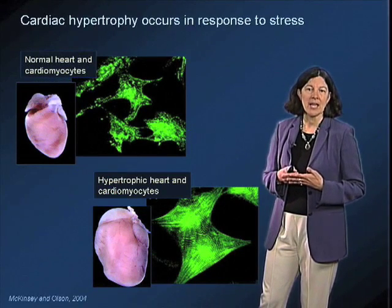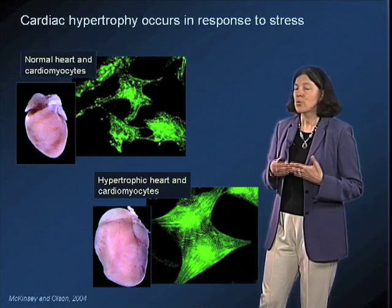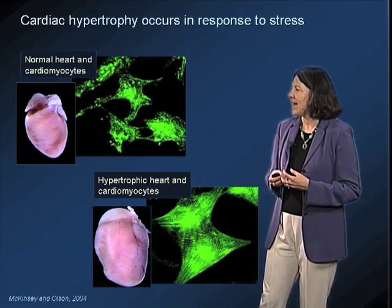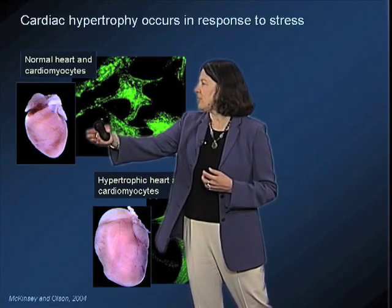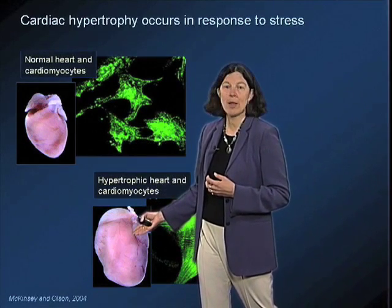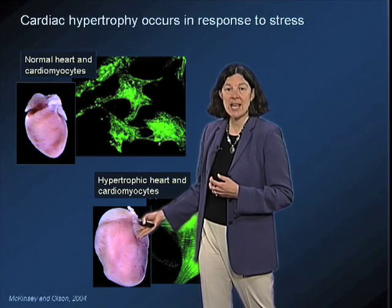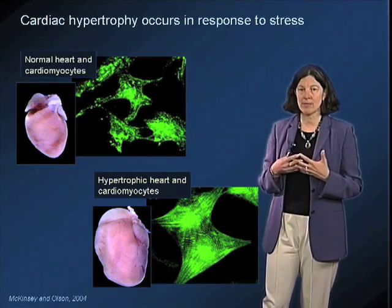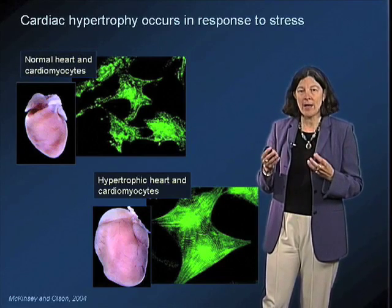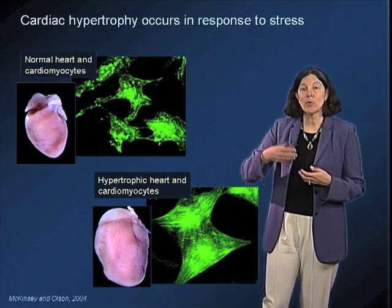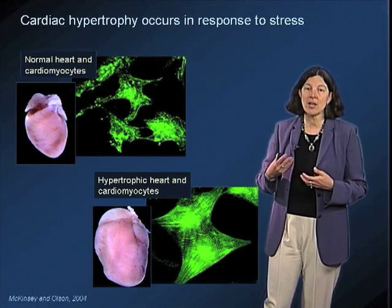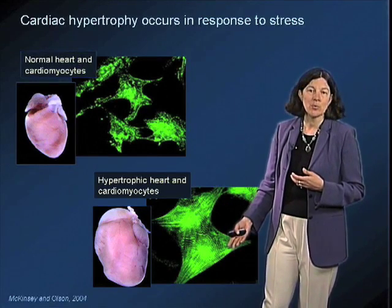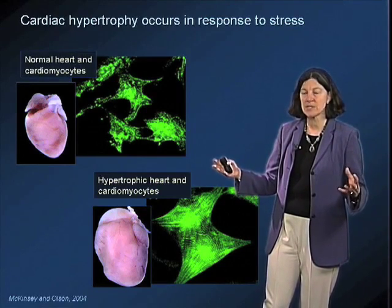A similar response to mechanical stress is evident in the cardiovascular system. Chronic high blood pressure is known to put an additional load on the heart, and when that condition exists, you get a morphological increase or hypertrophy of the heart. We now understand that this is not due to the production of additional cardiac cells — we're born with the number of cardiac muscle cells that we're going to have when we die. However, excessive mechanical load causes the activation of cellular programs that lead to expansion of the size of individual cardiac muscle cells, and this ultimately leads to expansion of the size of the heart.